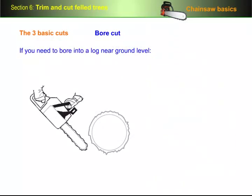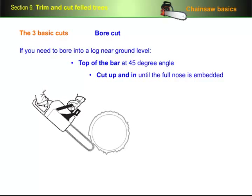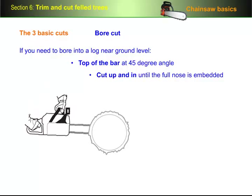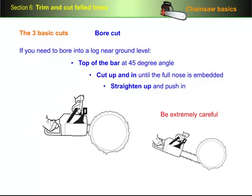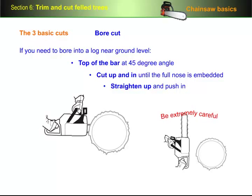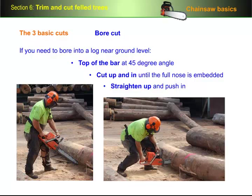If you need to bore into a log near ground level, you can start the cut using the top of the bar, again at a 45 degree angle. Cut up and in until the full nose is embedded in the wood, and then straighten up and push in. But you need to be extremely careful that you don't let the reaction force push the bar out of the cut and cause kickback. Again, you should use your legs for extra power as you push in.